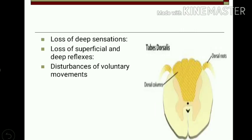The person also has loss of deep sensations including position sense, vibration sense, stereognosis, and discrimination of touch — all are lost. These sensations of the same side are lost because they are carried by the dorsal column pathway. Fine touch, tactile localization, proprioception, vibration, and conscious kinesthetic sensations are all carried by the dorsal column pathway and are lost on the same side below the level of lesion.